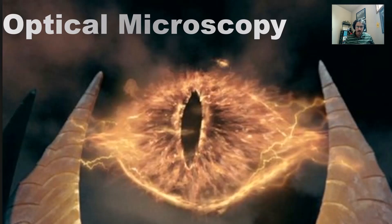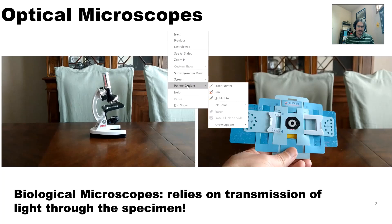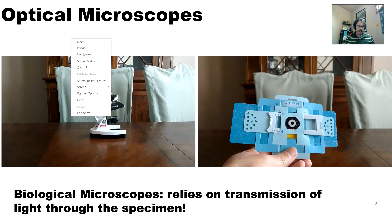The instrumentation we use to perform optical microscopy is an optical microscope. When you ask a random person on the street what a microscope looks like, in most cases they think of the stereotypical microscope, which is generally used for biological applications.